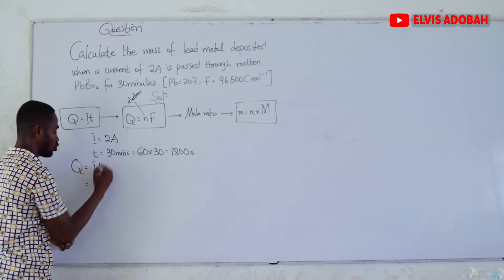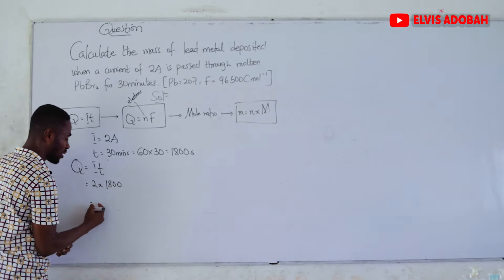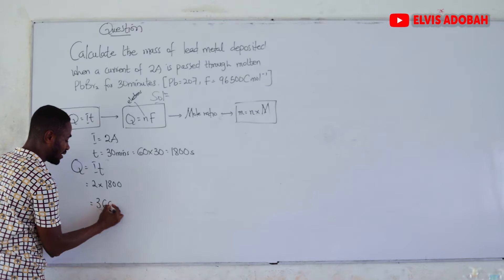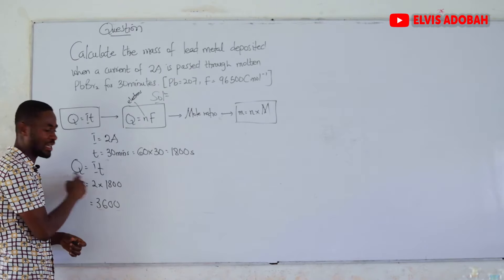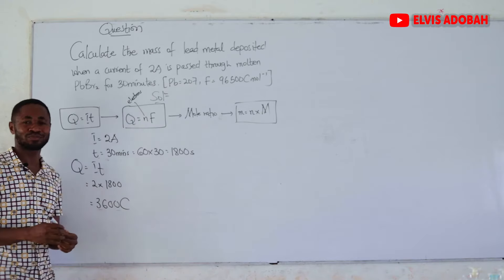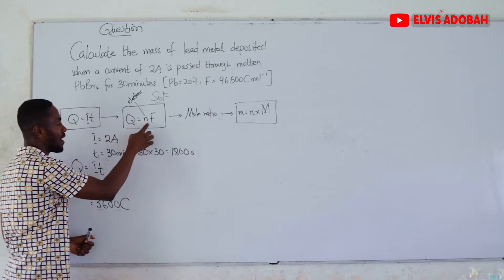Let's start with our procedure. First, we find the quantity of electricity that will be passed through. Q is equal to IT. I is 2, T is 1,800, and that should give us 3,600.